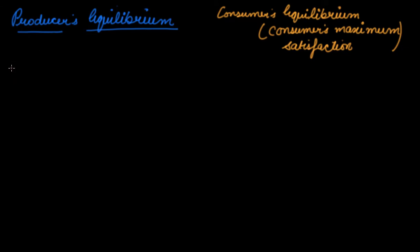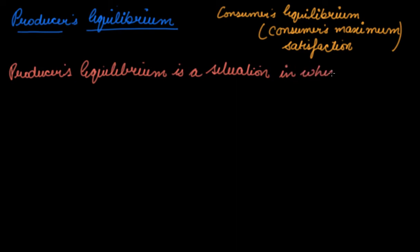The producer's equilibrium is a situation in which he maximizes his profits.